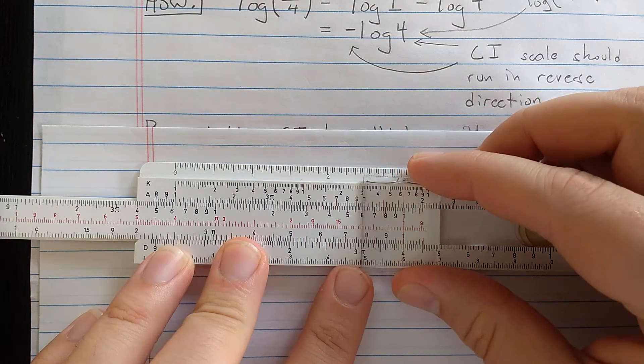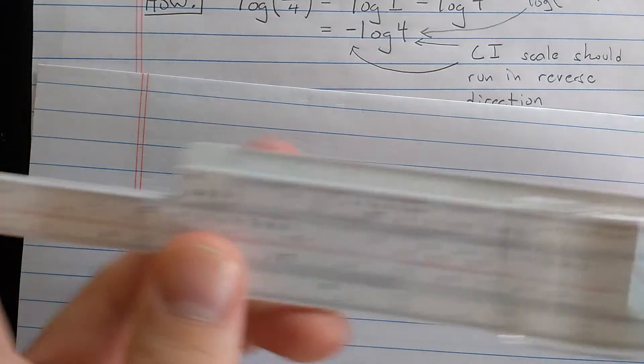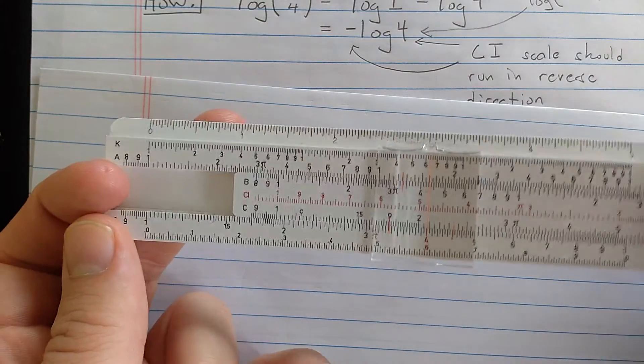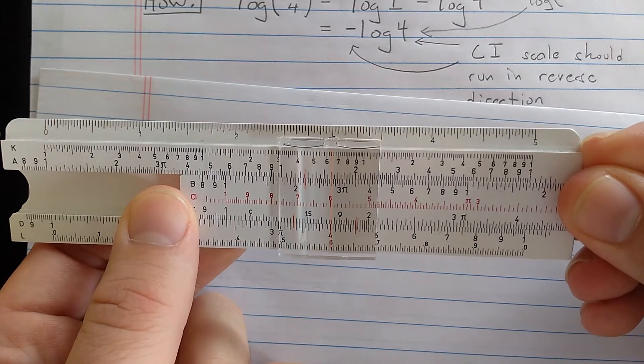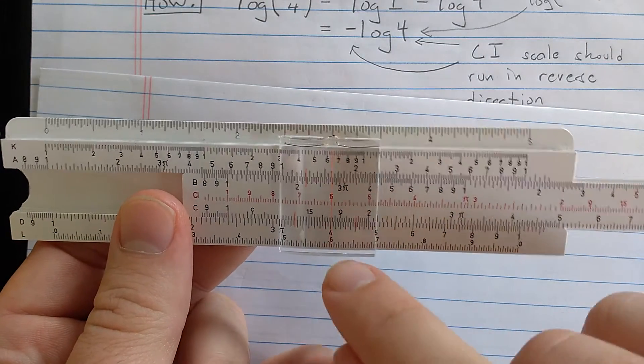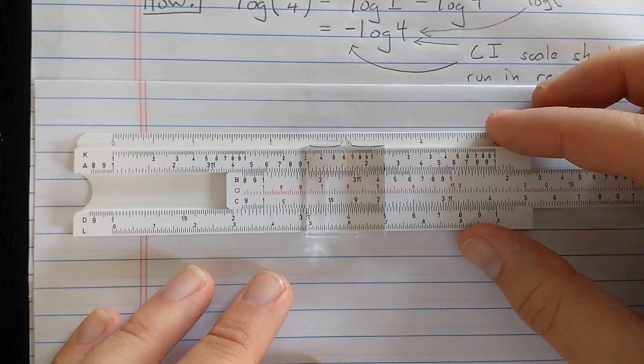What I'm going to do is find the 4 and I'm going to align the 4 with the 6, not on the C scale, but with the 6 on the CI scale. Now you need to be careful the CI scale runs in reverse, especially when you're trying to use the tick marks in between numbers. You need to remember that the CI scale is running in reverse. That's often why it's red, to remind you of that.